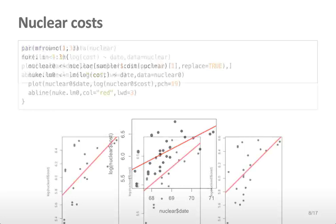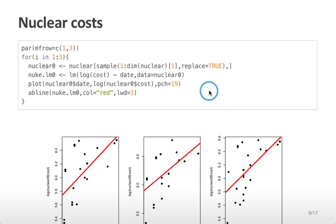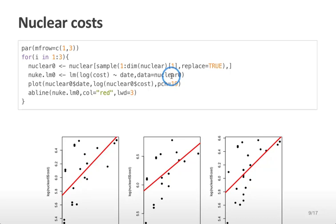Next I can calculate bootstrap samples and refit the line. First I'll do this explicitly. I generate a new data frame, nuclear zero, in each of three simulated examples. I sample with replacement from the indices of that nuclear data frame — in other words, I take a sample with replacement from the rows of this data frame. I then fit a linear model using the subsampled data. I can plot the fit from each different random sampling of the data, and in each case I get a slightly different regression line with a slightly different slope and a slightly different intercept.